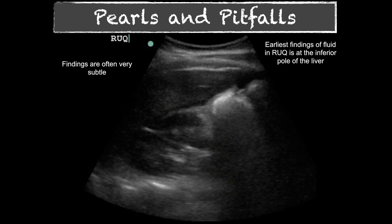Findings are often very subtle. This image here is positive for free fluid. The fluid has accumulated at the inferior pole of the liver, which is one of the more sensitive areas initially. As fluid comes up from the pelvis or crosses from the spleen while the patient is supine, it typically collects at the inferior pole of the liver or kidney — whichever is most inferior — also referred to as the paracolic gutter. Eventually it spreads upward between the kidney and the liver.